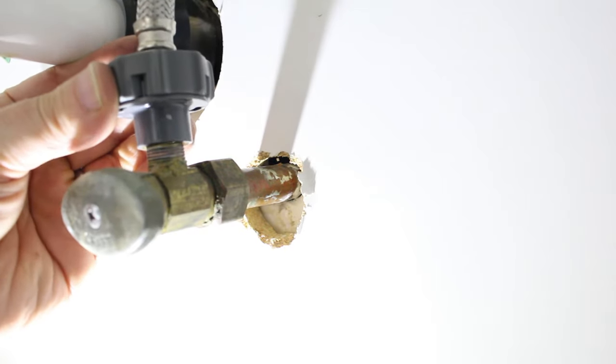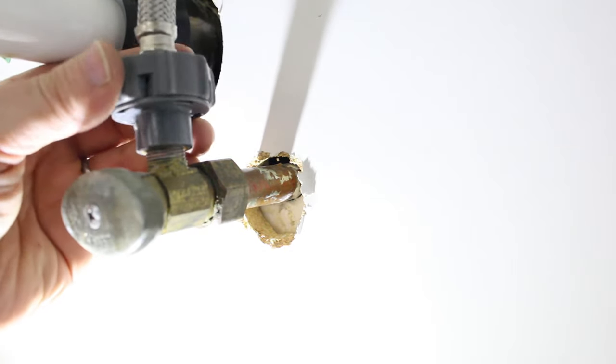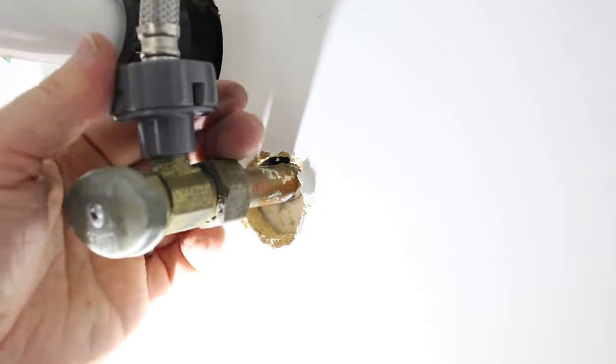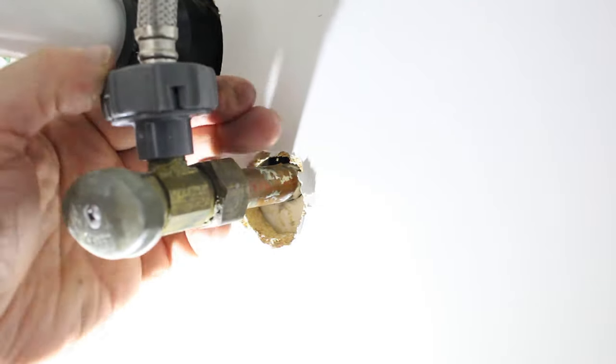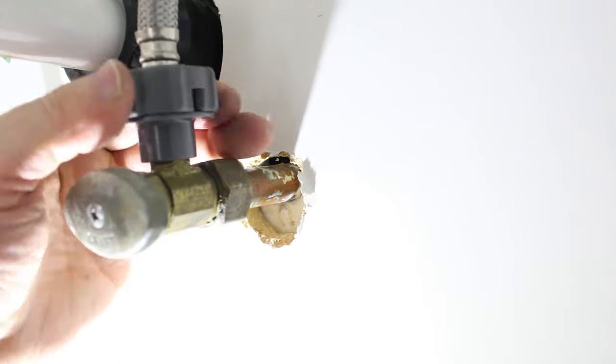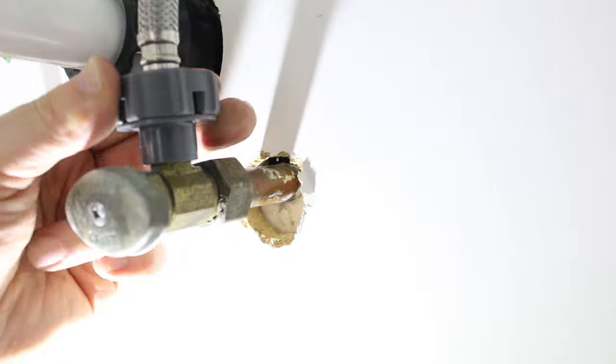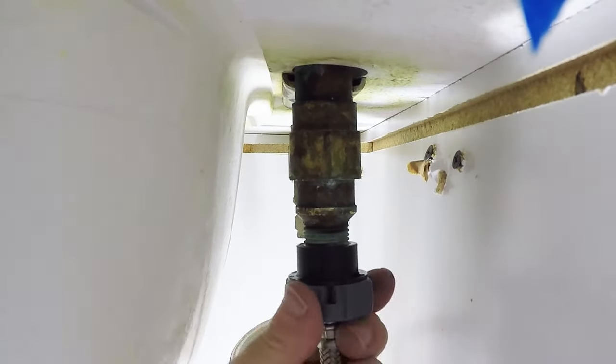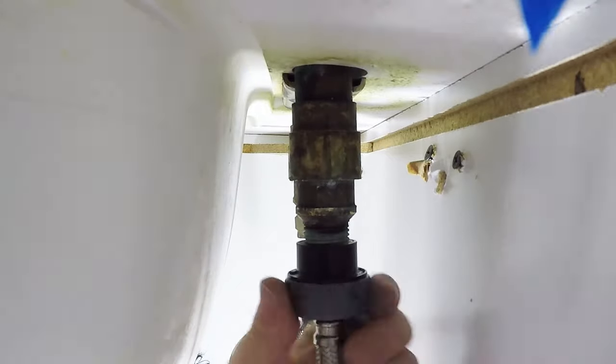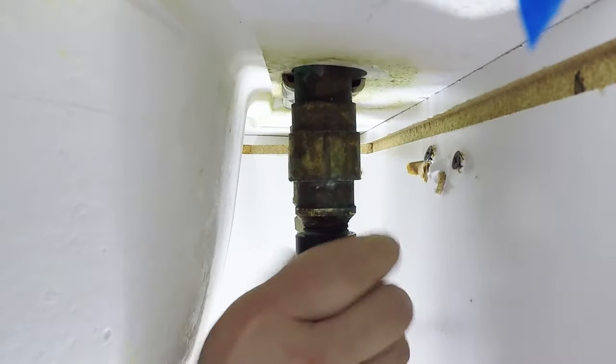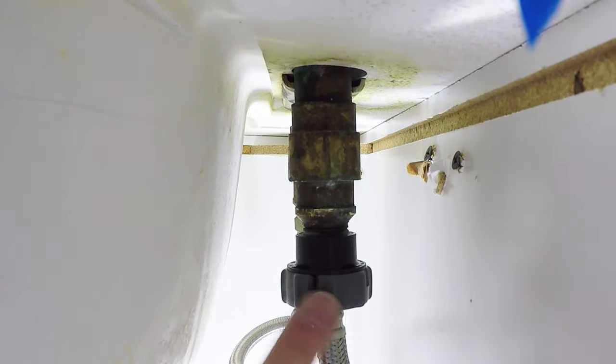Okay, so we're just going to tighten this onto the shutoff valve by hand. This part will not make the clicking sound. So you're just tightening this until it won't go any further by hand. But you don't need any tools. Okay, that's all the further it will go. Now we'll do the faucet connection. And you will hear the clicking sound once it's tight enough. So there you go. That was the click.